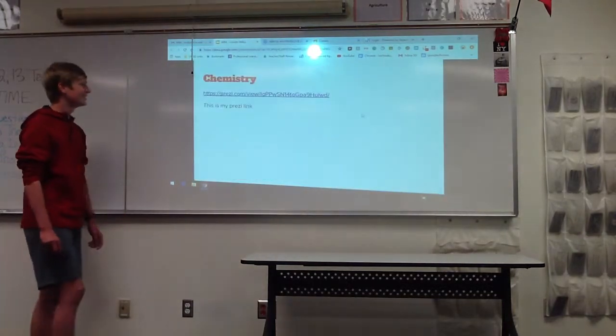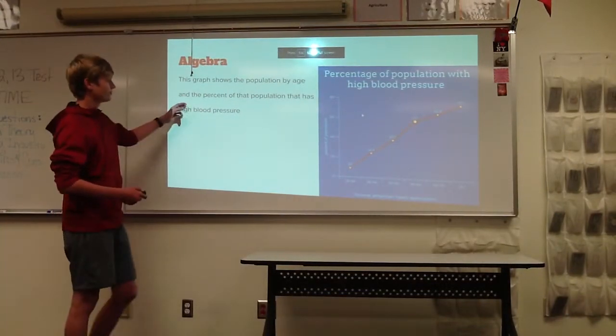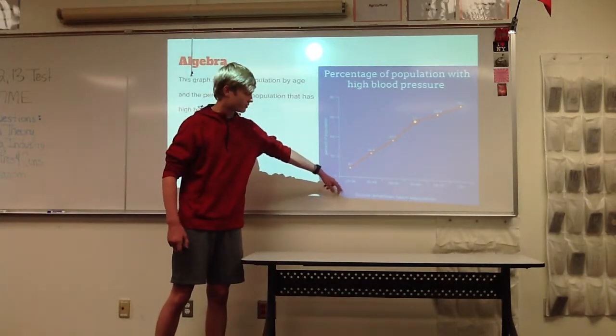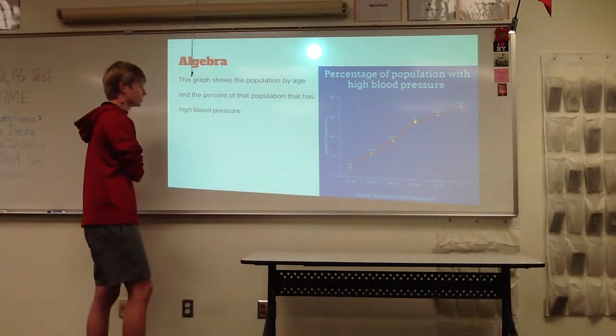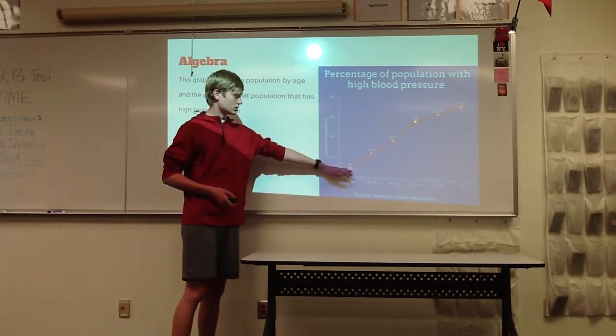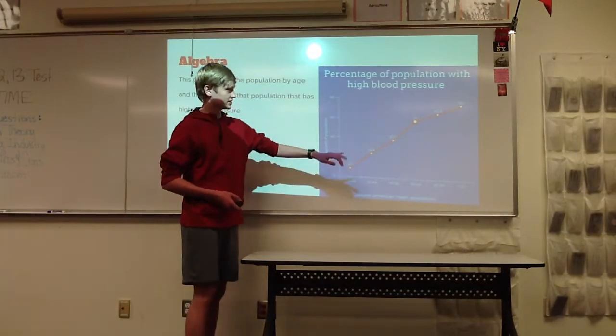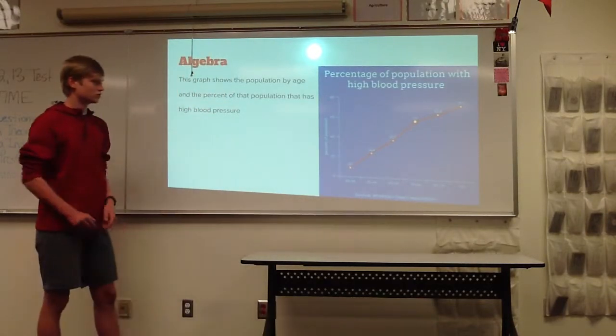And my algebra. It shows population by age: 20 to 34, 35 to 44, so on and so forth, and the percent of that population that has high blood pressure. So 9% of 20 to 34 year olds all the way to 72% of 75 year olds and older.